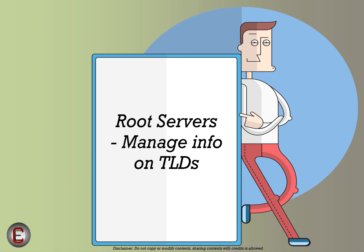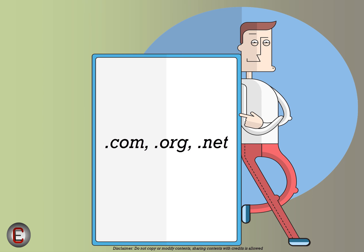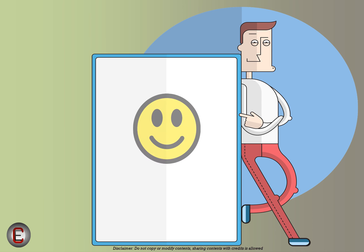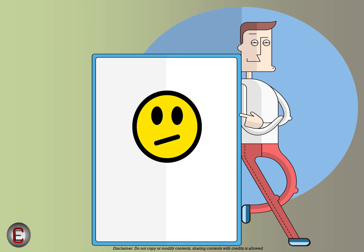If these DNS servers do not have the information you are looking for, the final resort is to go to the root servers. These are no magic servers — they just manage entries for top-level domains, also called TLDs. Examples of TLDs are .com, .org, .net, and so on. From here, a trickle-down or hierarchical approach is taken to find the final domain-to-IP mapping. In our example it is facebook.com, so we look for who has .com and eventually find facebook.com. If it is a longer name, it will take more queries to finally find the IP.